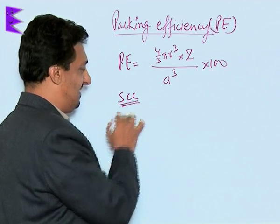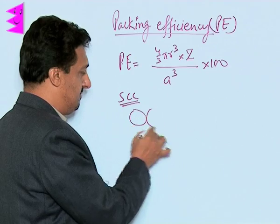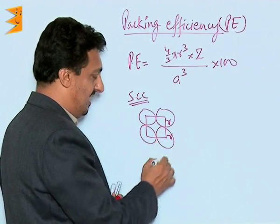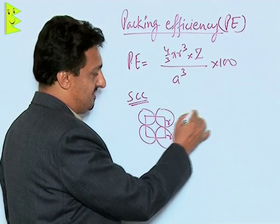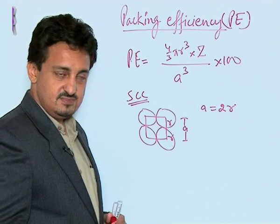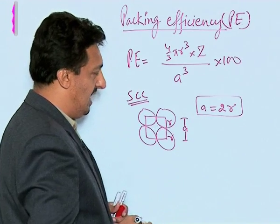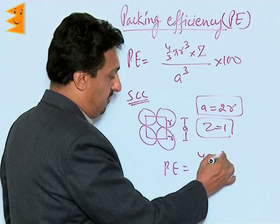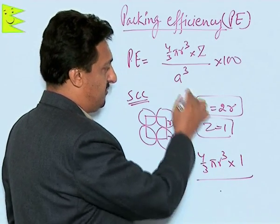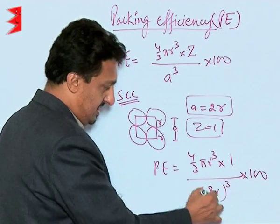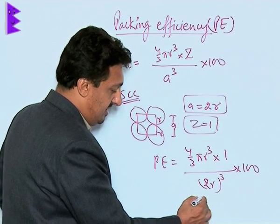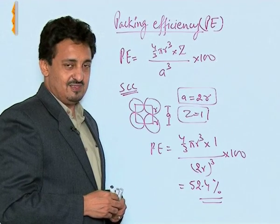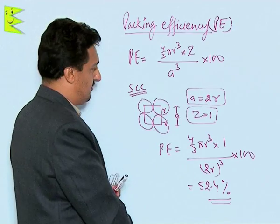For the SCC (simple cubic) unit cell, the particles at corners are in contact with each other, so the edge length a is equal to 2r. With z = 1, the packing efficiency is: (4/3 π r³ × 1) / (2r)³ × 100. After cancelling r³, this comes out to be 52.4%. So the packing efficiency of the simple cubic or primitive unit cell is 52.4%.